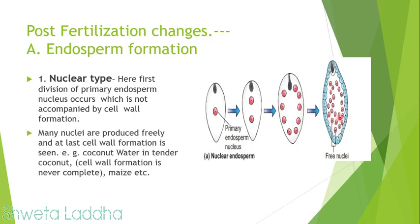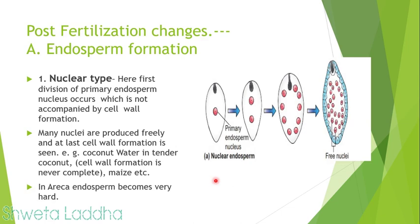The best example of nuclear type is coconut water — the tender coconut water is liquid endosperm formed by nuclear type, containing thousands of nuclei, with cell wall formation occurring at the end. It is also seen in maize. In areka (supari), the endosperm becomes very hard and stays with the nut; it is called ruminate endosperm, also developed by nuclear type.